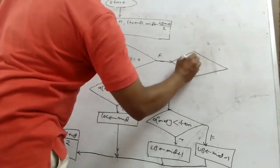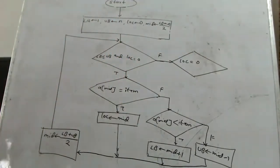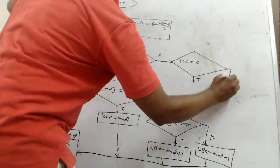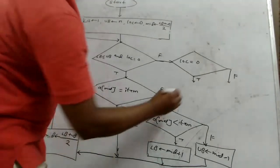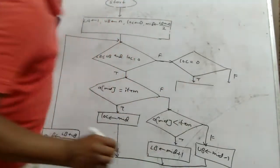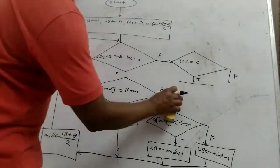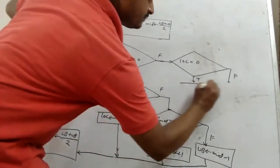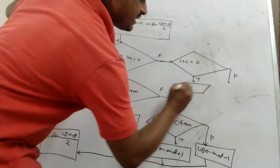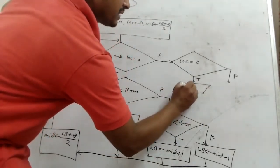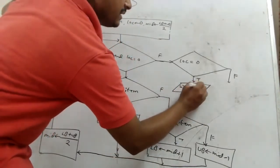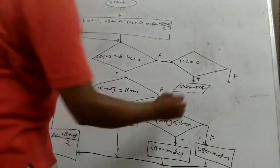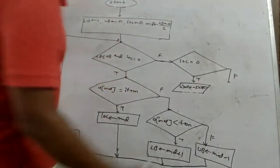Loop से exit के बाद फिर से condition है: loc equals to 0। तो आपके पास दो case हैं — true और false। अगर condition true है, तो उस case में output display हो रहा है। जब भी read या write operation होते हैं, parallelogram का use करते हैं। यहाँ write करेंगे: item not found।